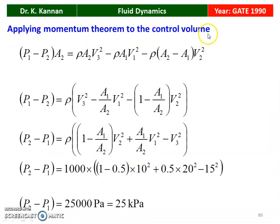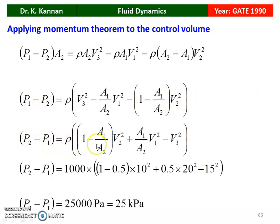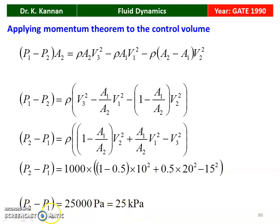Applying the momentum theorem to the control volume: (P1 − P2)·A2 = ρ·A2·V3² − ρ·A1·V1² − ρ·(A2 − A1)·V2². Dividing through by A2 and rearranging: P2 − P1 = ρ[(1 − A1/A2)·V2² + (A1/A2)·V1² − V3²]. Substituting: P2 − P1 = 1000[(0.5)(100) + (0.5)(400) − 225] = 25,000 Pa = 25 kPa. The pressure difference is 25 kPa.